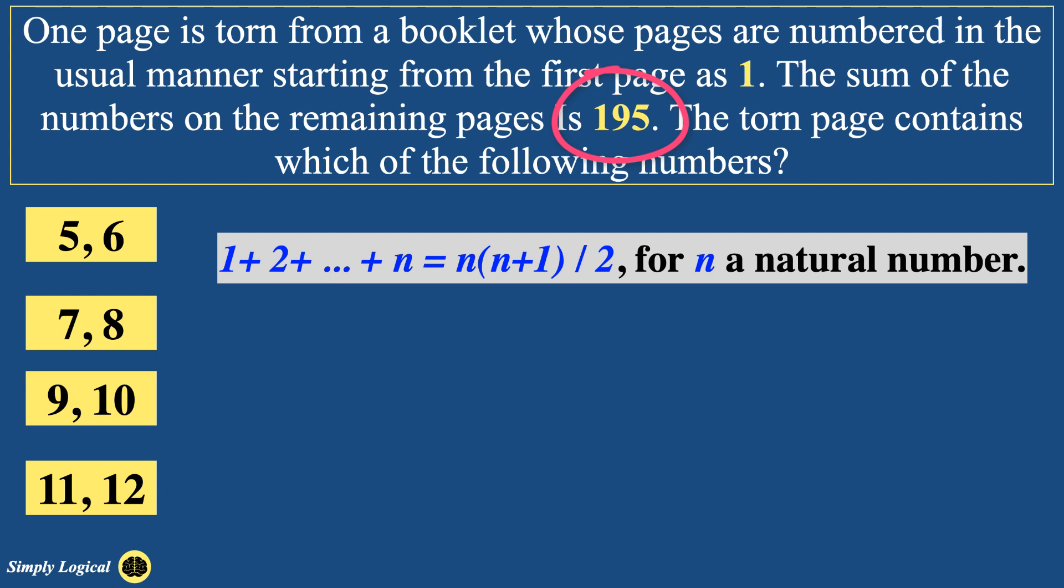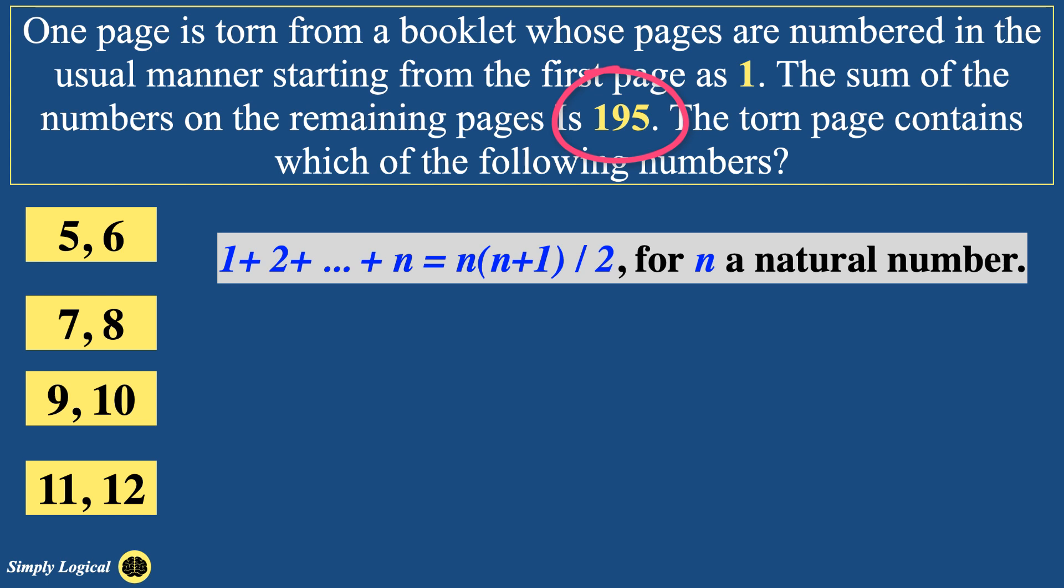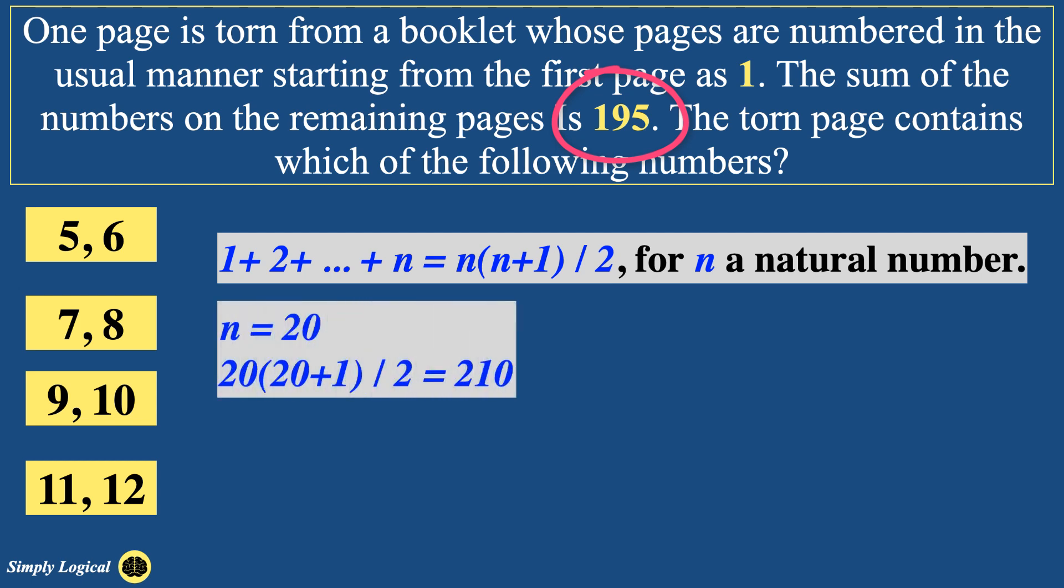For example, first consider n equals 15. Sum of first 15 natural numbers is 15 into 16 divided by 2, which is 120 after solving. Since 120 is less than 195, we have to choose another number which is coming close to 195 and it should be greater. So now consider n equals 20, which will result in 20 into 21 divided by 2. This equals to 210.